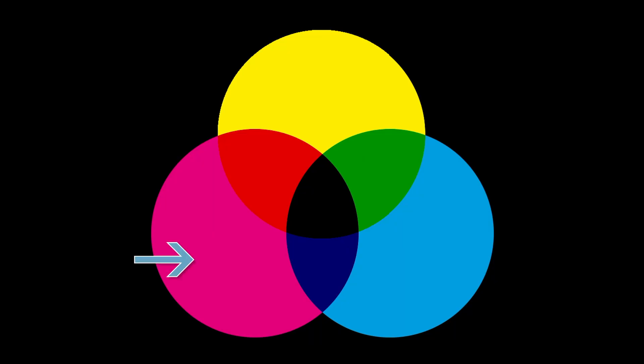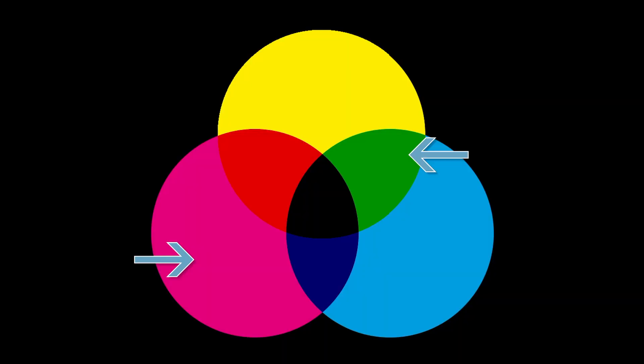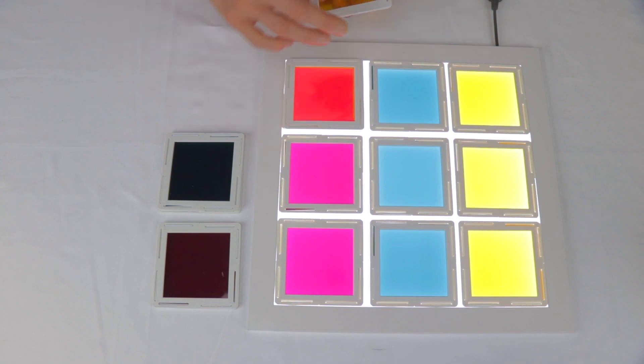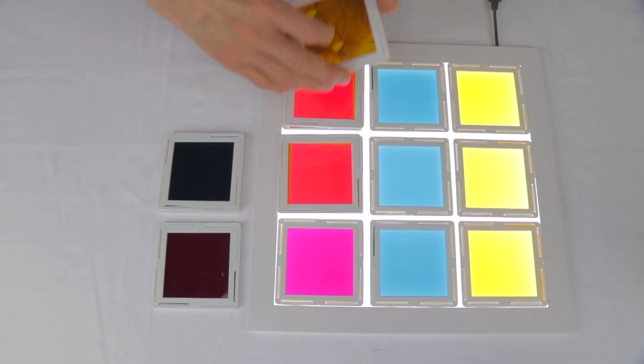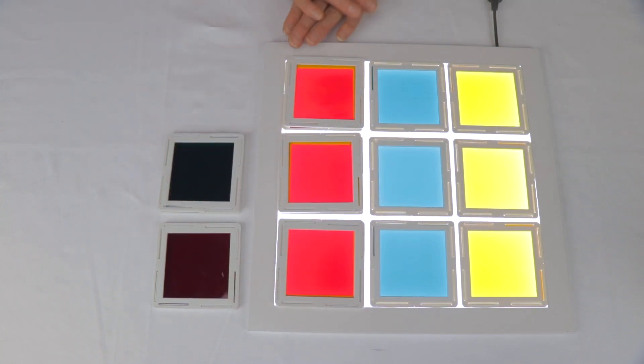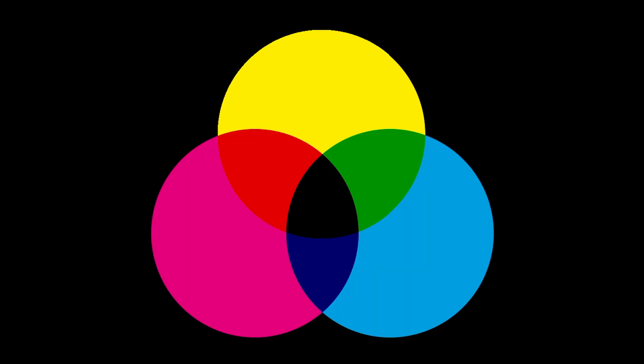Let's start with the magenta column first. If we take a look at the color wheel and locate magenta, we'll see that across from it is green. When colors are across from each other, it's an easy way to remember which color is absorbed. So magenta absorbs green, leaving red and blue to show through. In this case, we would need to place a yellow filter on top because yellow is absorbing the blue, which we can confirm by looking at the color wheel again. So when the yellow is added, only red light is visible.